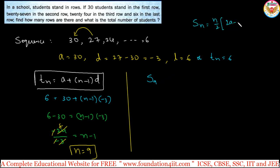S9, the sum of 9 terms: apply the formula 9/2 times [2a plus (n-1)d]. With a equals 30, this is 9/2 times [60 plus (9-1) times (-3)]. Simplify the bracket: 2 times 30 is 60, 9 minus 1 is 8.